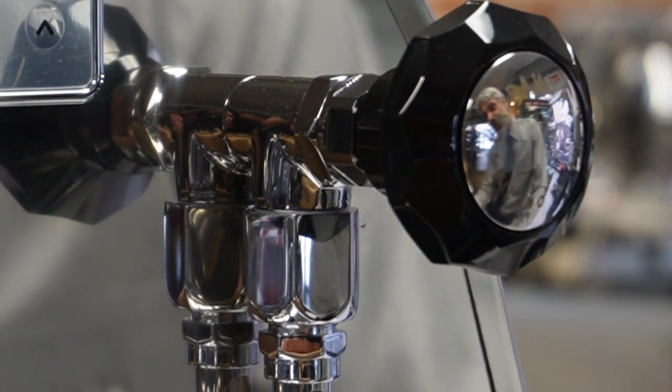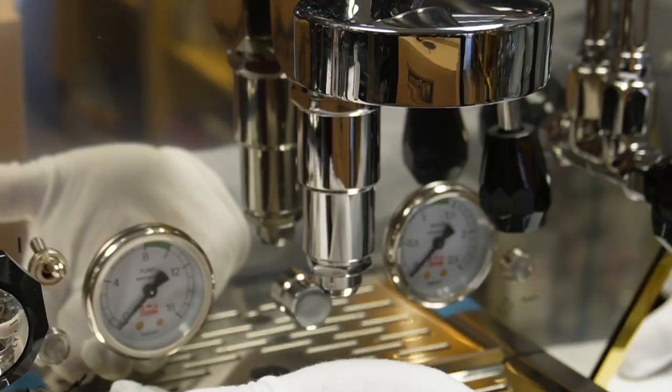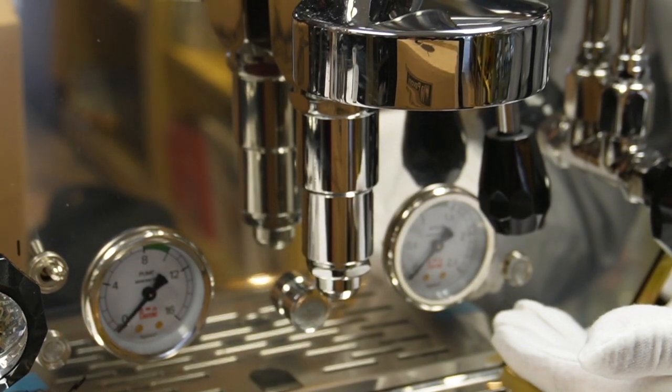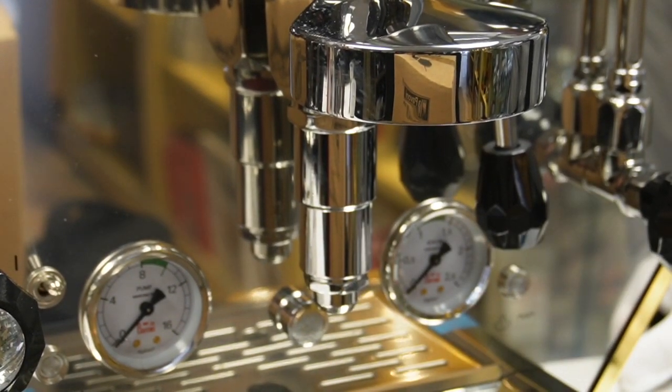Below the brew group, there are two gauges: one to indicate pump pressure, and the other to indicate when temperature is optimal.